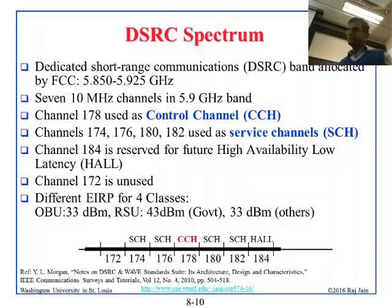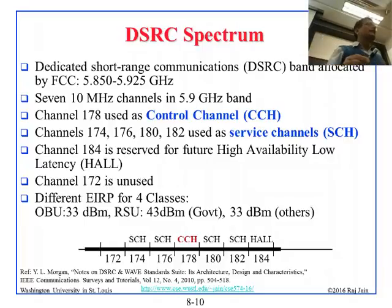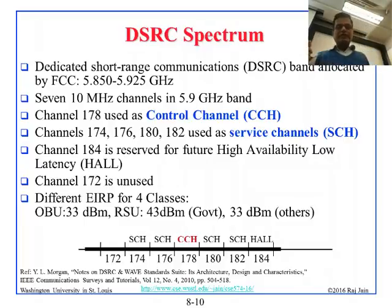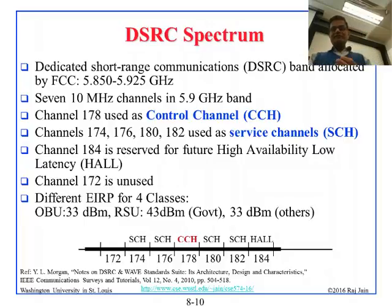There are 4 classes of service with different EIRP power limits set by the FCC. An OBU — onboard unit, i.e., the car — can transmit at 33 dBm EIRP. An RSU — roadside unit — owned by the government can transmit at 43 dBm, while a privately-owned RSU is limited to 33 dBm. EIRP is measured including antenna gain, so a 23 dBm transmitter with a 10 dBi antenna gives 33 dBm EIRP.